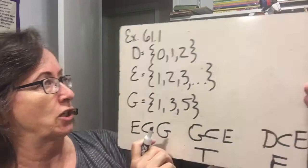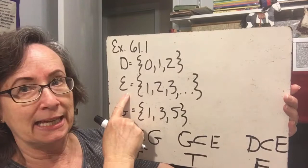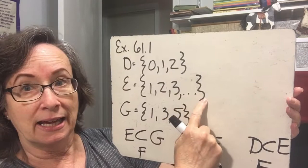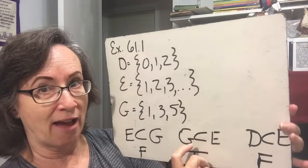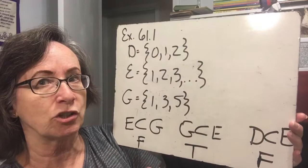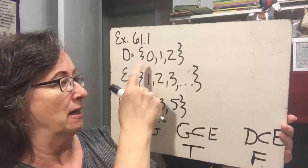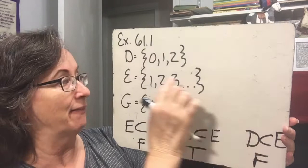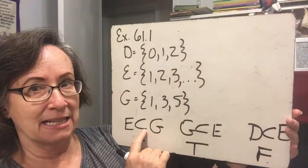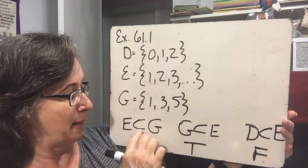Here's example one. Set D is {0, 1, 2}, set E is the set of natural numbers {1, 2, 3, ...}, and G is {1, 3, 5}. They gave us three statements and asked which are true or false. Is E a subset of G? E is the set of all natural numbers — it has things like 3, 4, 5, 6 that are not in D, so E is not a subset of G. That statement is false.